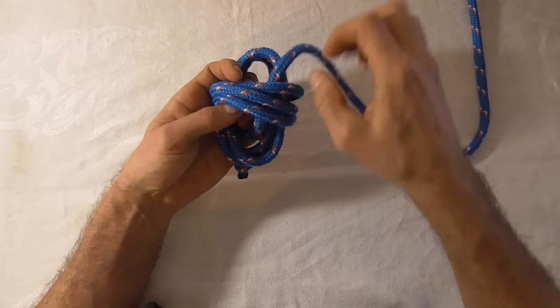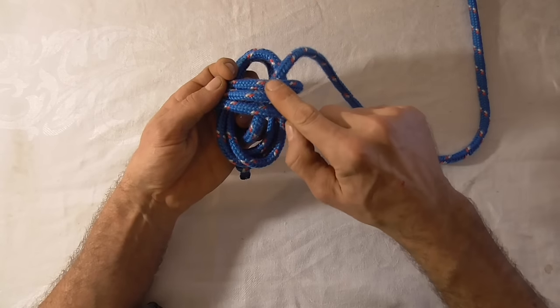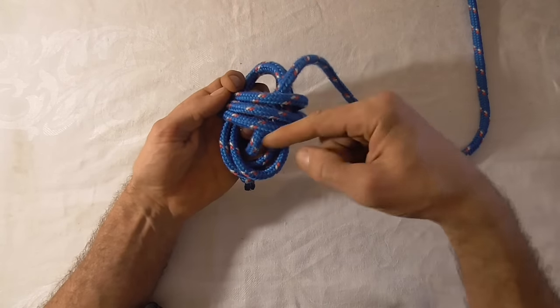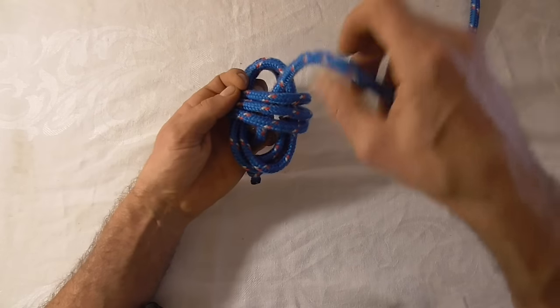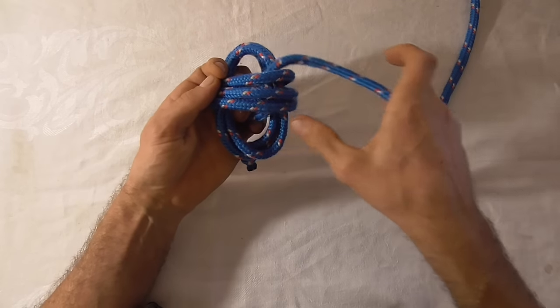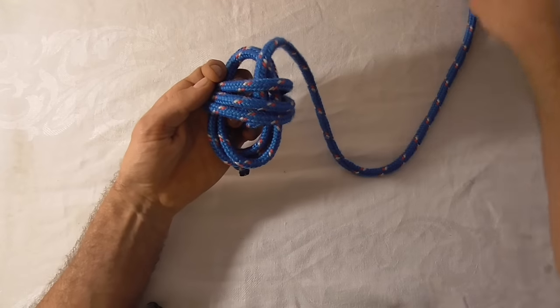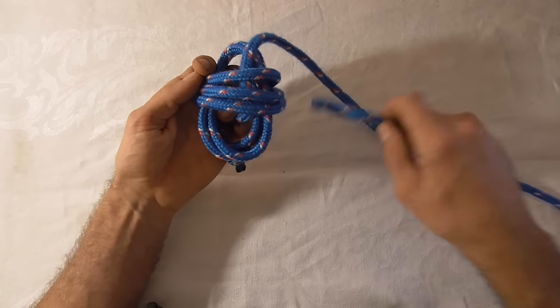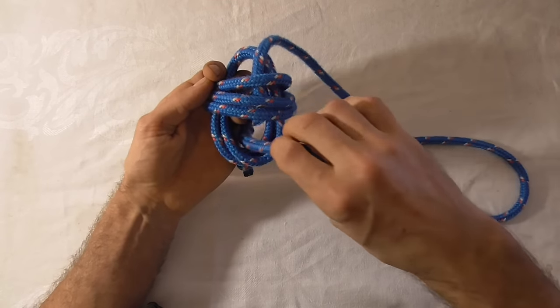And now I want to take three wraps around these three strands. Not the whole bundle, just these three strands. And I'm going to work from right to left in this case. So I'm going to dive back down through that loop.